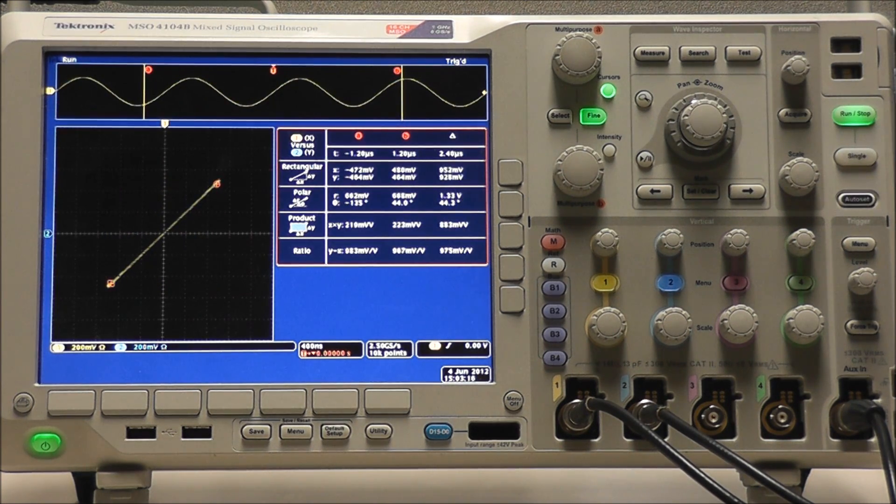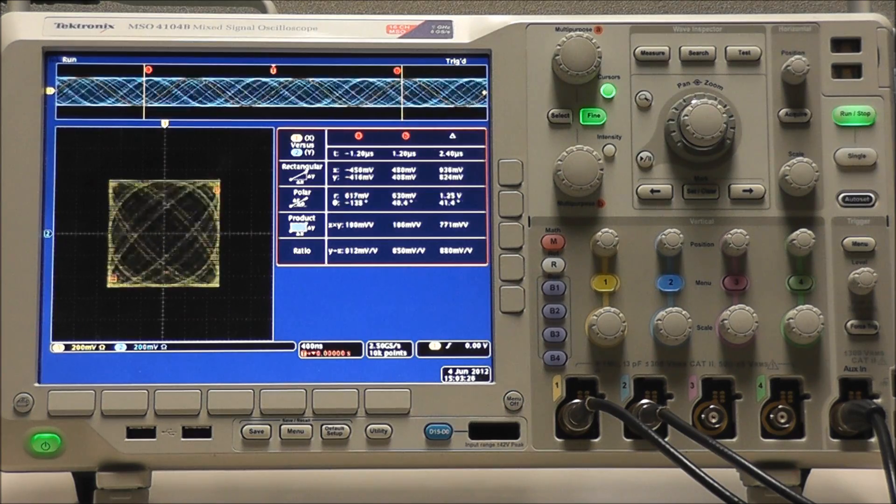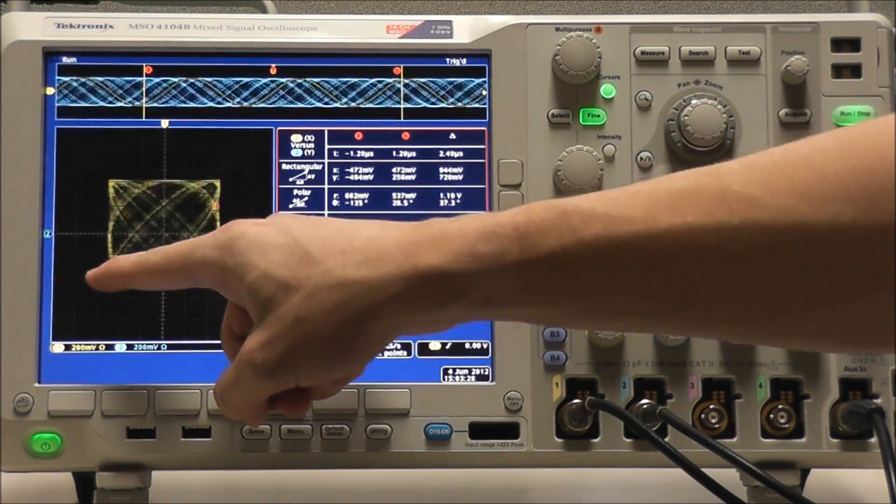But that's not all. The machine can even distinguish frequencies that differ by just a fraction of a MHz. I set channel 1 to 1 MHz and channel 2 to 1.001 MHz, and we can see this kind of square here.